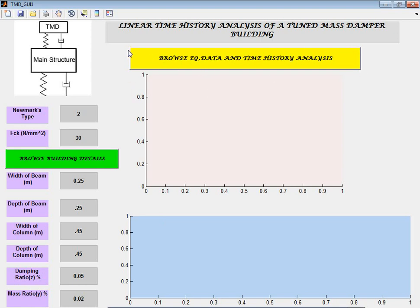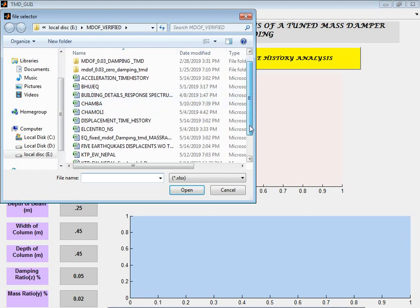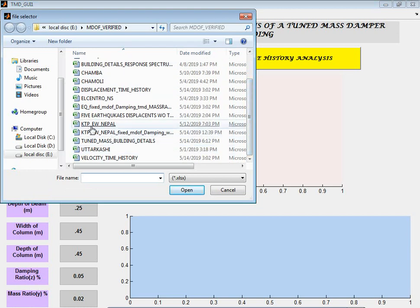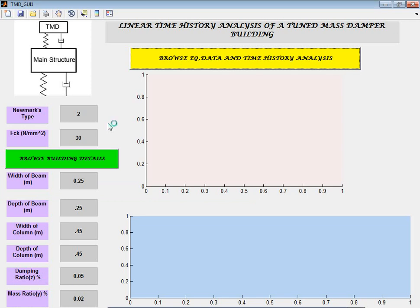Then browse again. If you click here on this yellow button, it works in two-fold: one is it will browse the earthquake data, and automatically it will analyze it. You can click any earthquake. Let's click Nepal earthquake KTP east-west station. Click OK, then after some time we will get the graph.